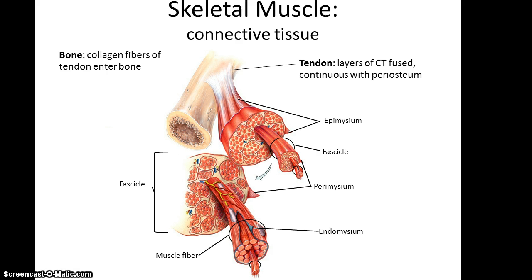This connective tissue structure of the tendon is continuous throughout the entire muscle organ, and the tendons attach to the bone. Not only is the tendon continuous with the periosteum, the outer layer of connective tissue on bones, but the tendon sends collagen fibers into the bone tissue itself, making for a very strong attachment.